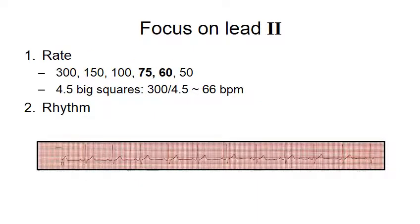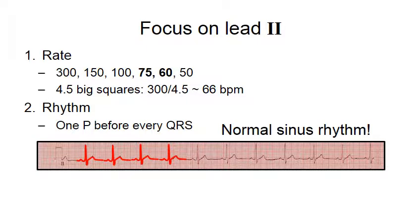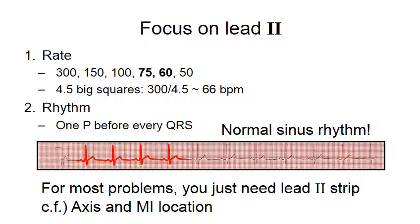After the rate, you can determine the rhythm still from the lead 2 rhythm strip. The first complex has a P, QRS, followed by T. Second, third, fourth, all have one P before QRS. So this is one P before every QRS, which corresponds to normal sinus rhythm. Looking at lead 2, you can get a lot of information. So for most problems, you just need lead 2 strip.